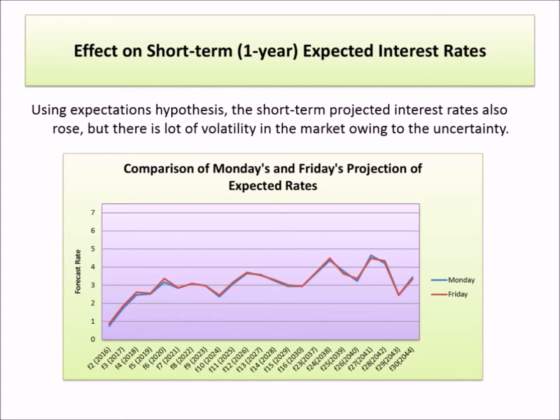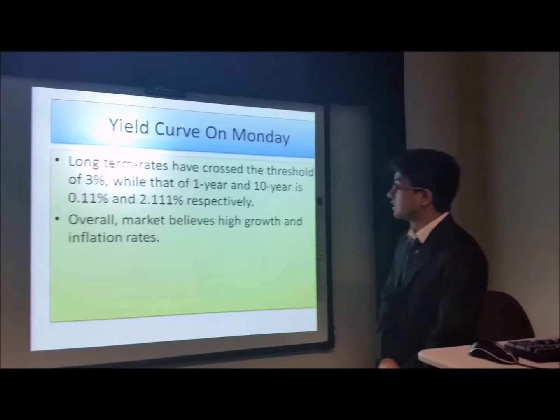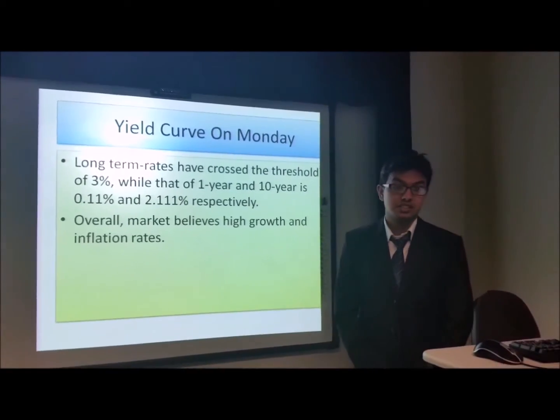Using the expectations hypothesis, the short-term projected interest rates also rose, but there is a lot of volatility in the market owing to the uncertainty. There are many dips and valleys in the expected one-year rates, but the most prominent one is for the 10-year note. The volatility is more persistent either at the front-end or the tail-end. Long-term rates have crossed the threshold of 3%.